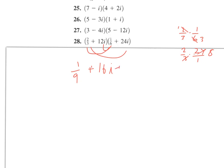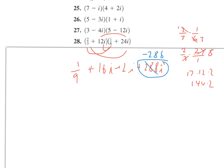Inner times inner gives us 2i. Last times last: 12 times 12 times 2 is 144 times 2, which is 288, so that's plus 288i squared. With i squared we always change that to negative one, so negative one times positive 288 is just negative 288.